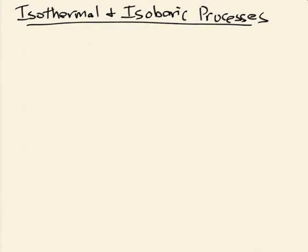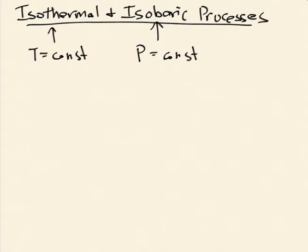Let's talk about two processes I think I can squeeze into one short video: isothermal and isobaric processes. Isothermal refers to temperature T being constant during the process, and isobaric means that the pressure is constant during the process. By T and P, I mean the pressure and temperature in the gas that I'm working with.